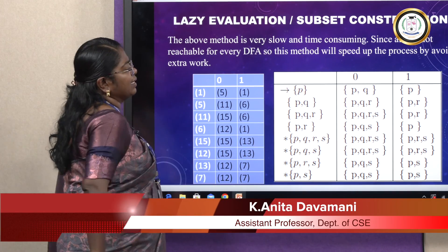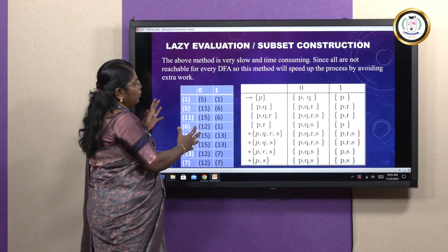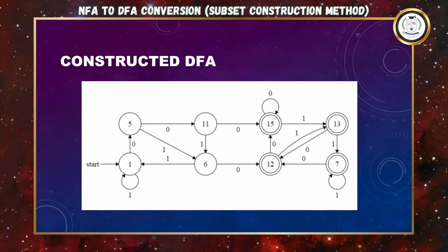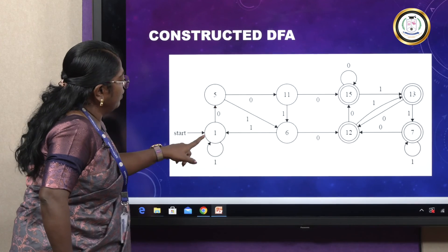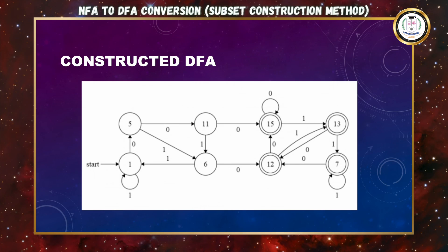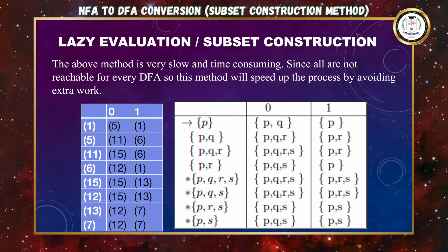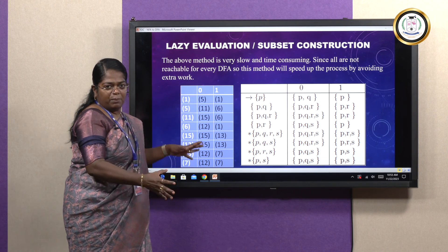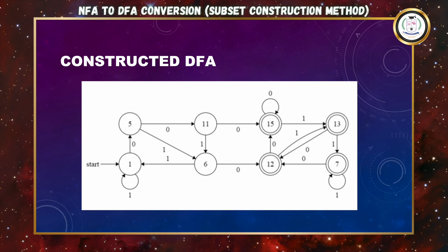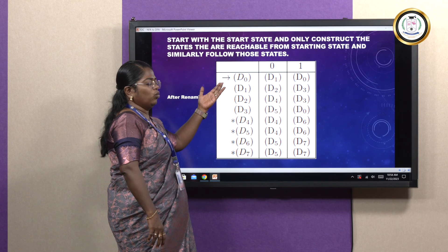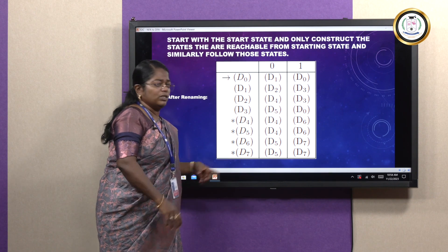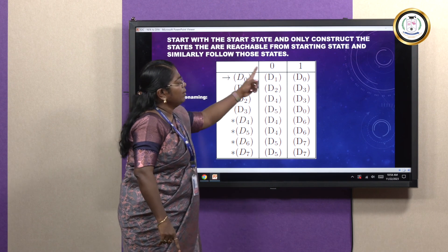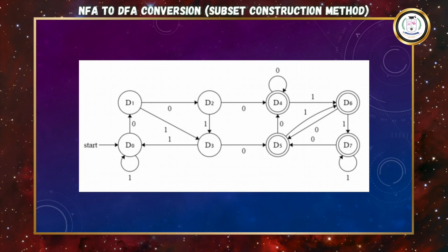This is the actual transition table after removing the unwanted transitions. Using this directly we can construct the DFA diagram. From state 1 with input 0 it moves to 5; with input 1 it stays at 1 — represented as a self loop. To avoid confusion from numeric labels, we rename the states with D0, D1, D2, D3, D4, D5, D6, D7 — giving us 8 states total. With these 8 states and inputs 0 and 1, we can draw the final DFA diagram.